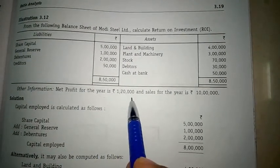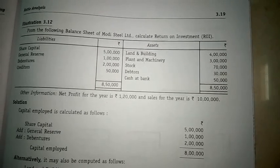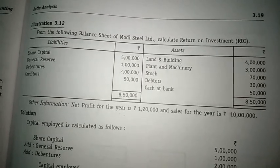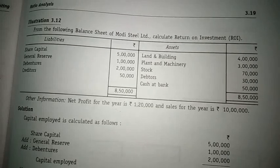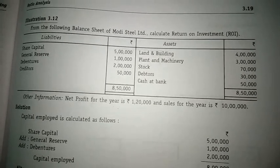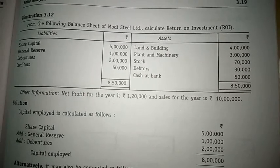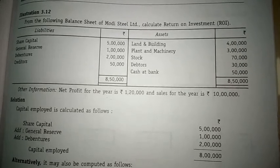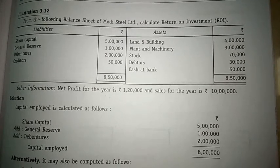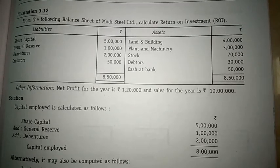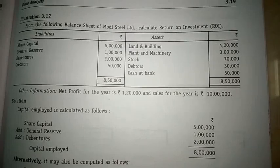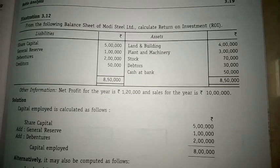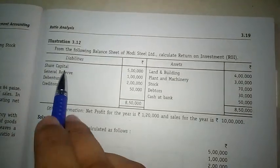To calculate Return on Investment, the information we require is net profit and capital employed. Here, the net profit given is 1 lakh 20,000, and we need to find the capital employed. Capital employed is the total of shareholder funds and other long-term debt capital — that is, shareholders' fund plus long-term loans and debentures.